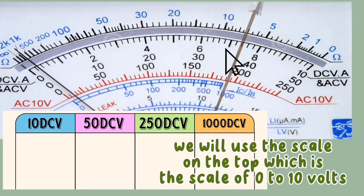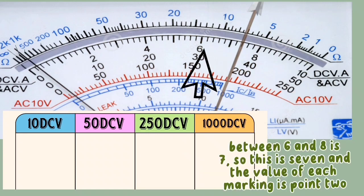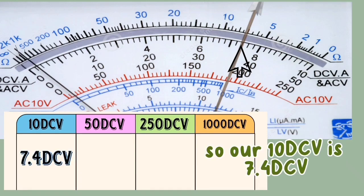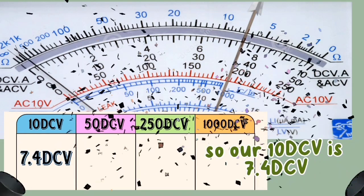We will use the scale on the top, which is the scale of 0 to 10 volts. Between 6 and 8 is 7, so this is 7, and the value of each marking is 0.2: 7.2, 7.4. So our 10 DCV is 7.4 DCV.